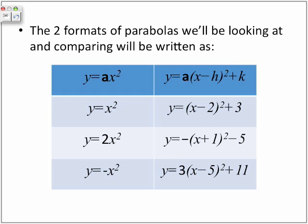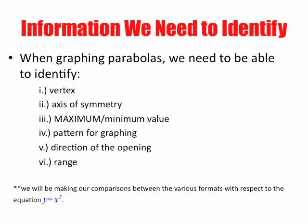The two formats of the parabolas we'll be looking at today will be written in the following format: y equals ax squared as opposed to y equals a(x minus h) squared plus k. And here are several versions or examples of equations or quadratic functions that are in that format, in that vertex form. Information we need to identify: when graphing parabolas, we need to be able to identify the following six things: the vertex, the axis of symmetry, maximum minimum value, pattern for graphing, direction of the opening, and the range. We'll be making our comparisons with respect to the equation y equals x squared.